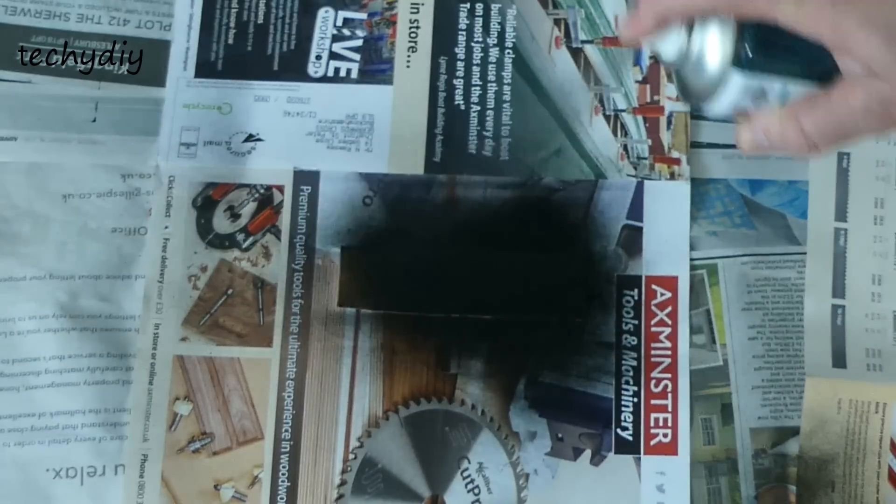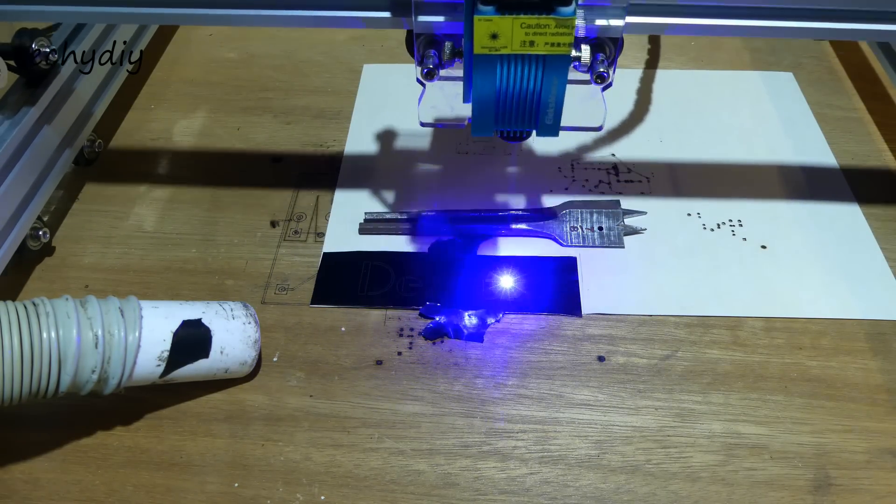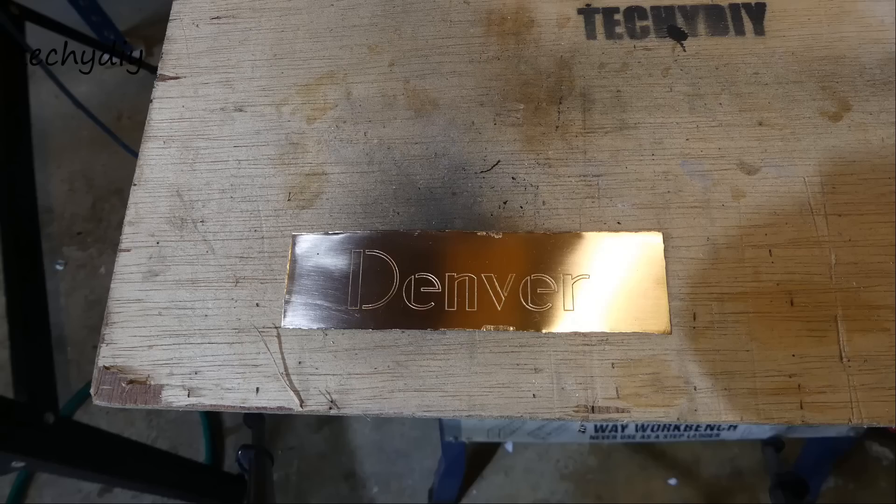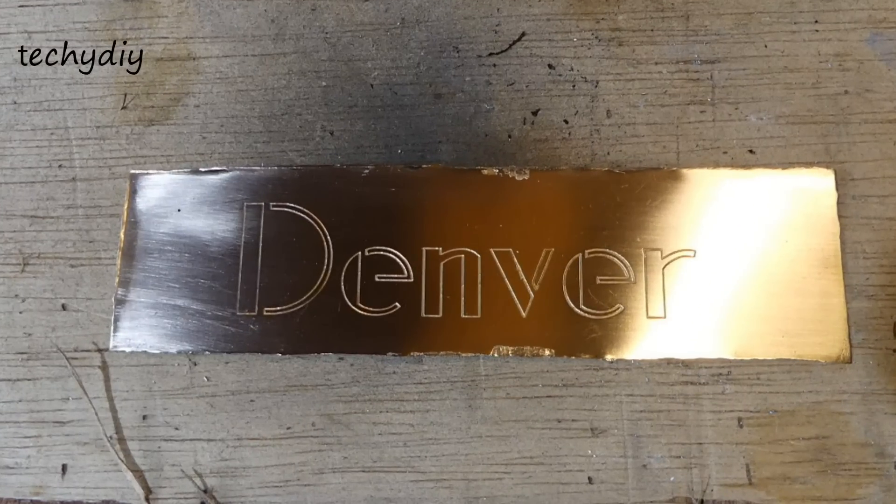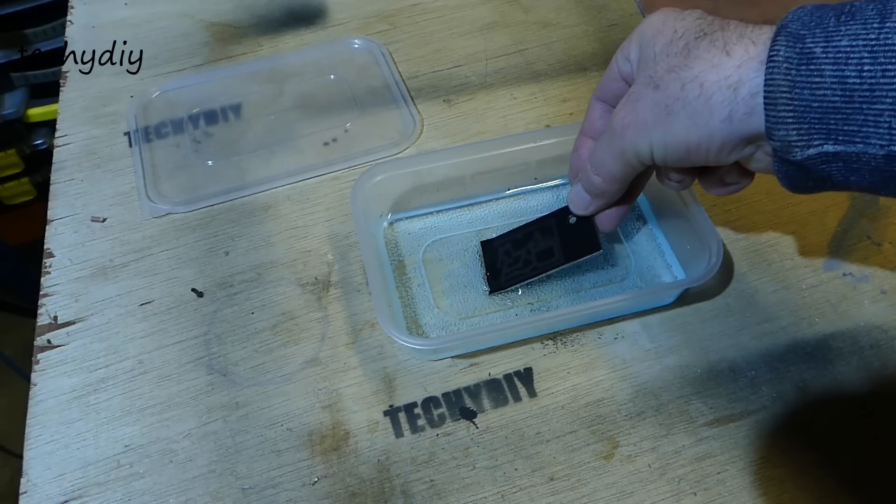And I also had a go at etching a brass sheet by spraying it matte black, burning off the text with a laser, and then putting it into sodium persulfate etching solution. The same process also works for making printed circuit boards.